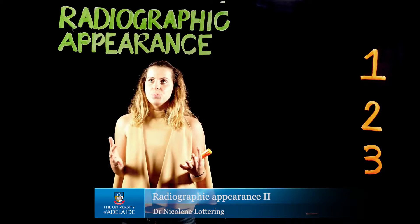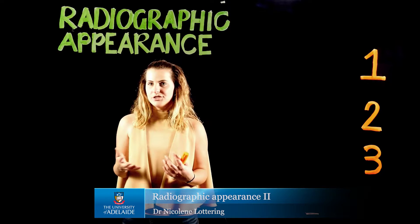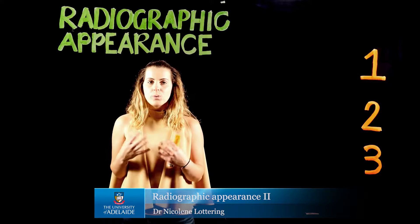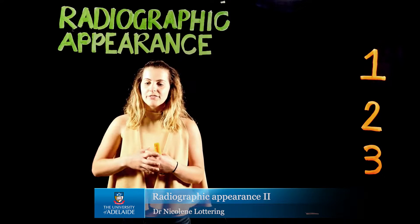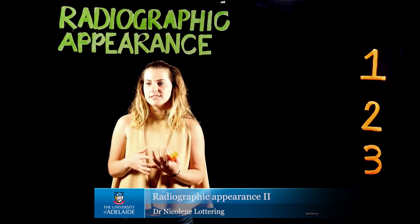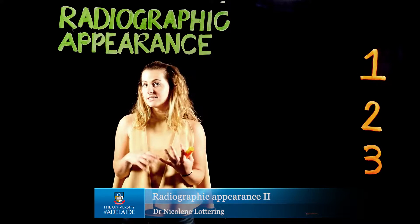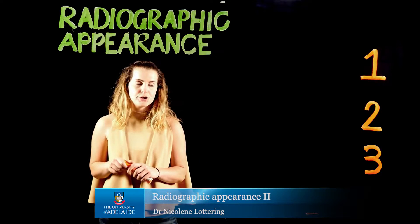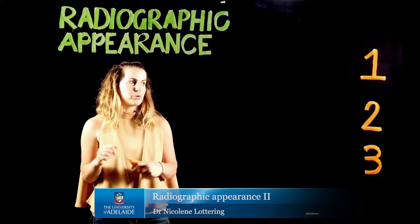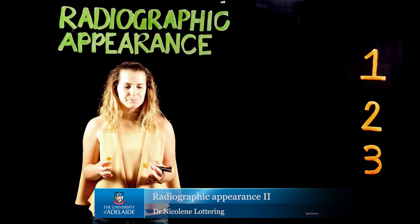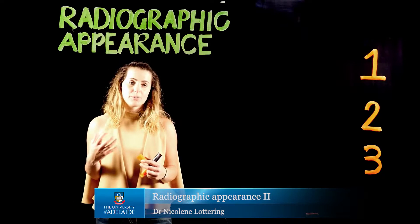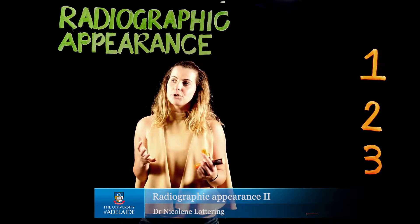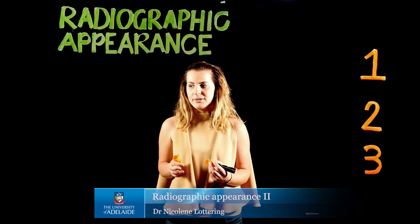When talking about the appearance of certain structures on either a CT or an MRI, we use the convention known as radiographic appearance, which characterizes a structure based on its density or intensity, what it looks like, and where it attaches. I'm going to bring up a series of MRI and CT scans to refer to as we go through these parameters.